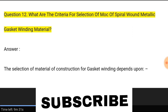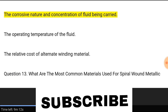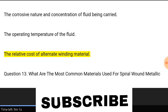Question 12: What are the criteria for selection of material of construction (MOC) of spiral wound metallic gasket winding material? Answer: The selection of MOC for gasket winding depends upon the corrosive nature and concentration of fluid being carried, the operating temperature of the fluid, and the relative cost of alternate winding material.